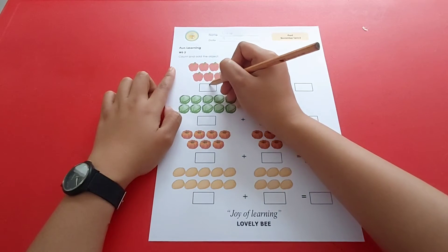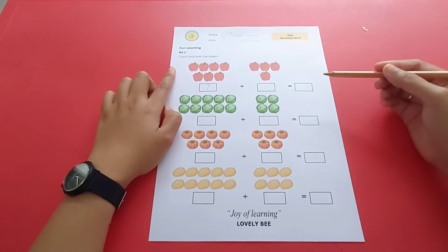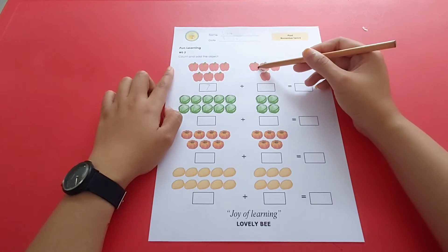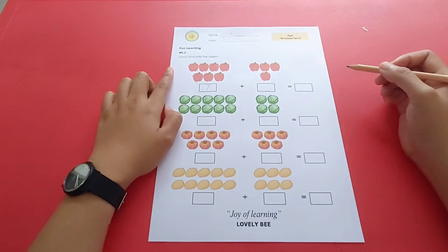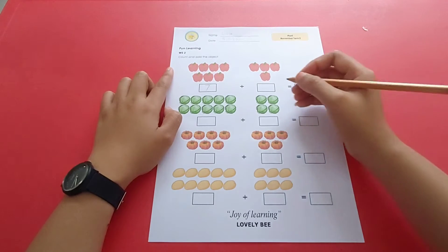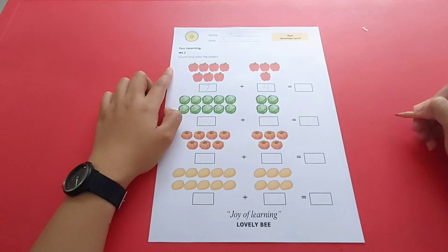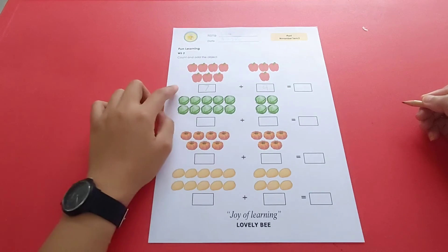Now let's try to count this bell peppers: one, two, three, four. Four bell peppers. Let's write down number four over here. Okay, we already have the number. Now let's try to add them.